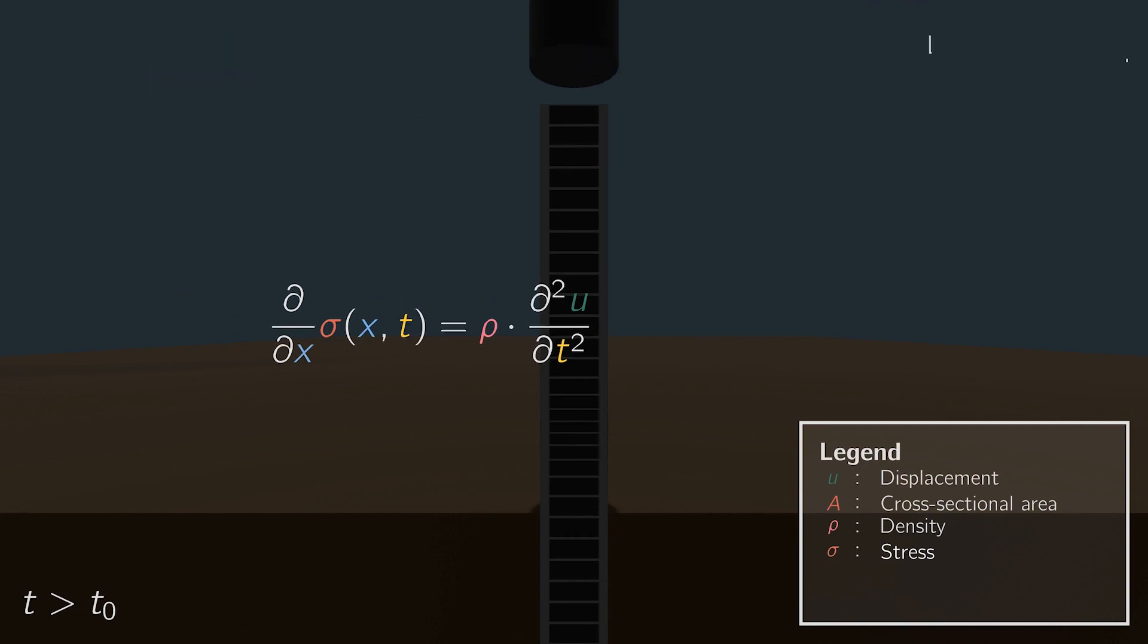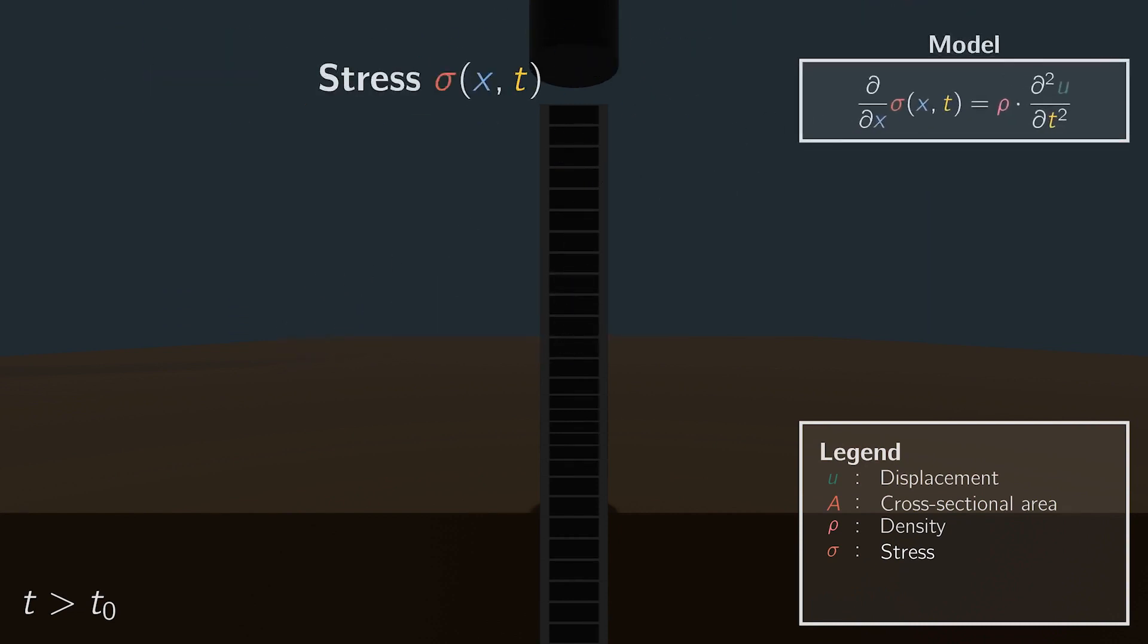To be able to calculate the stress, we want to understand a bit more about stresses. The internal stresses within the pile are proportional to the change in displacement, which we denote as the derivative with respect to x. The proportionality is determined by the elasticity E, which depends on the material. The elasticity of a steel pile differs from the elasticity of a concrete pile, which affects the stress. Now let's replace sigma in terms of displacements in our model.